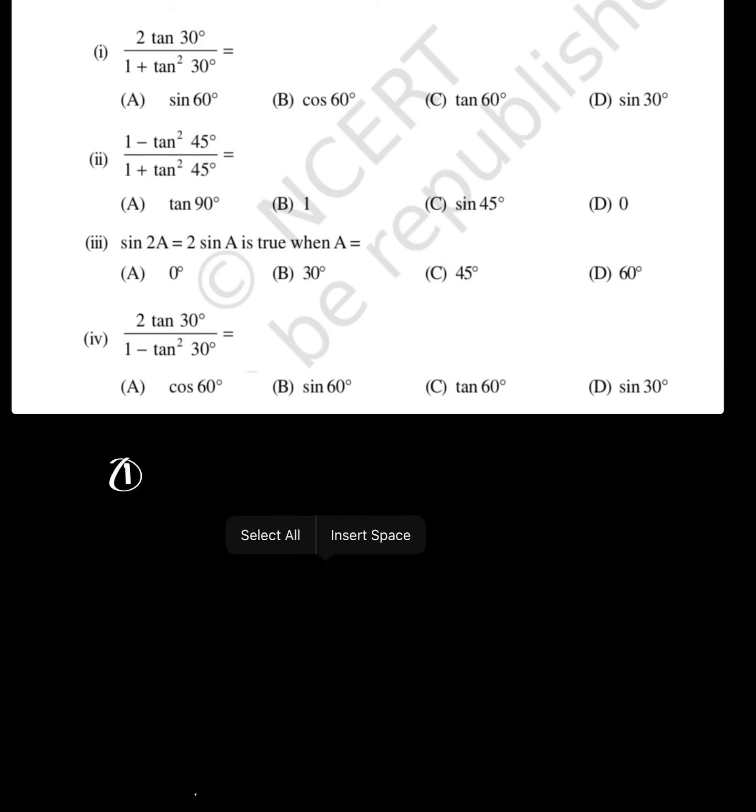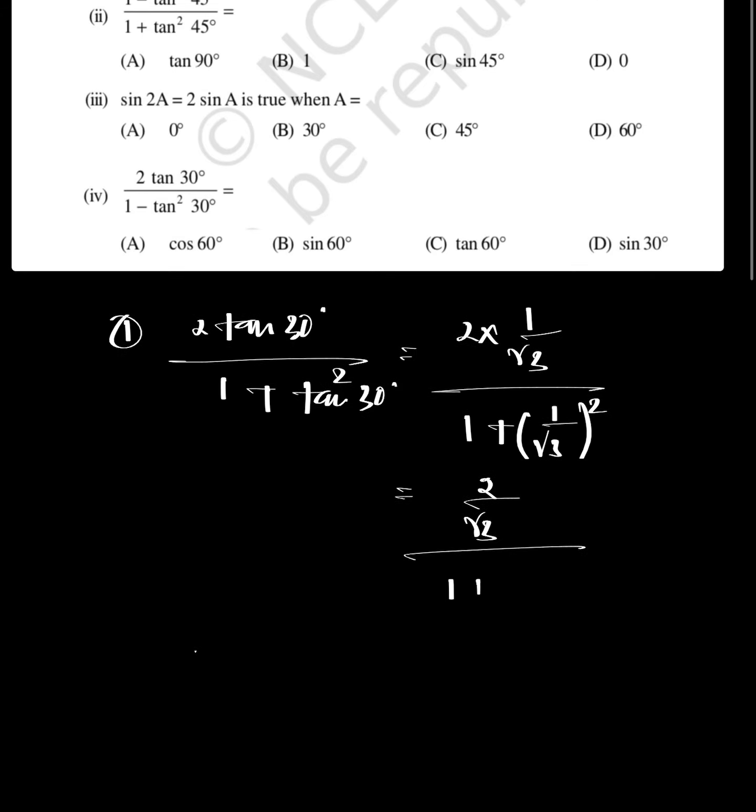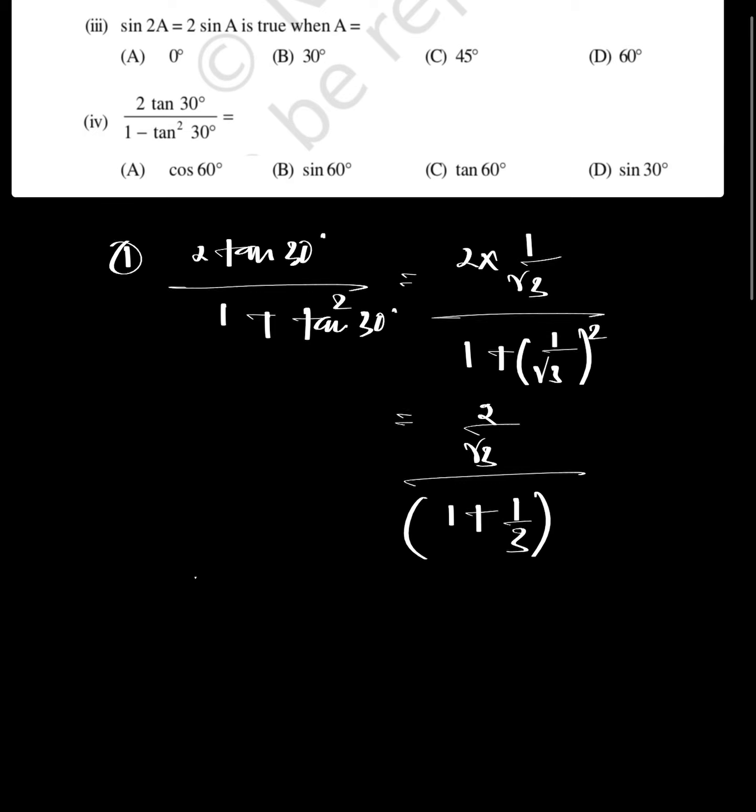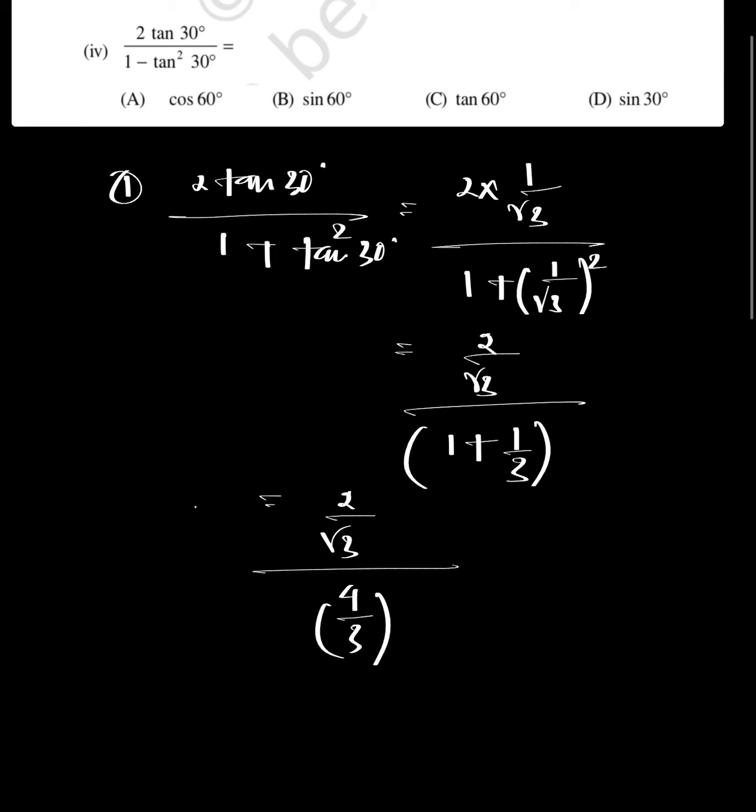First problem: 2 tan 30° divided by 1 plus tan² 30°. Substituting values, 2 times tan 30° equals 1 by root 3, whole divided by 1 plus tan 30° equals 1 by root 3 squared. This gives 2 by root 3 divided by 1 plus 1 by 3.